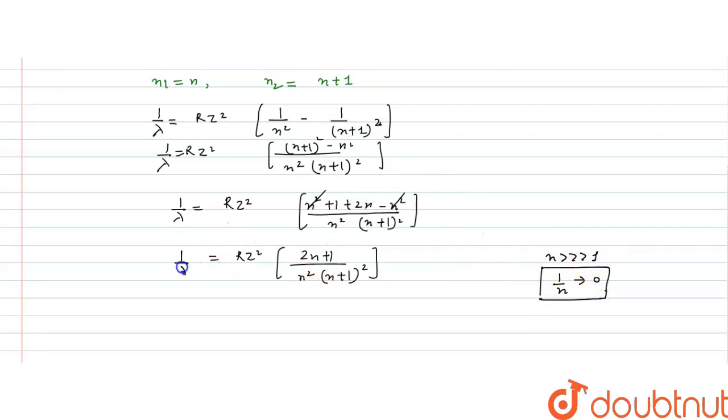So, if we take n common from here, it will be 2 plus 1 upon n. And in denominator, it will be n square into n square, and in the bracket, it will be 1 plus 1 upon n whole square.